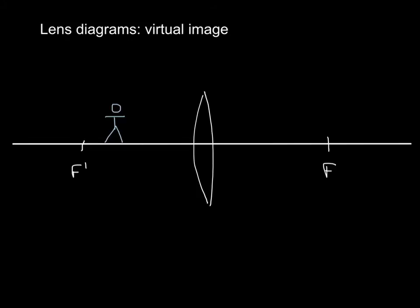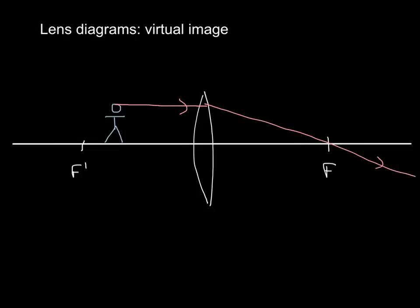Now I'm going to do exactly the same thing I did before — here I am, here's a lens — but this time I'm in front of the focal length instead of behind it. Let's see if that makes any difference to where the image gets formed. I'll draw one ray that goes parallel and then through the focal point, and another ray that goes to the center and keeps going.